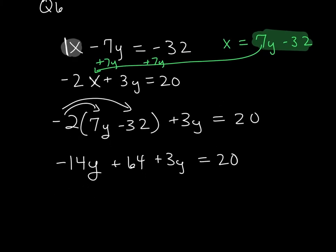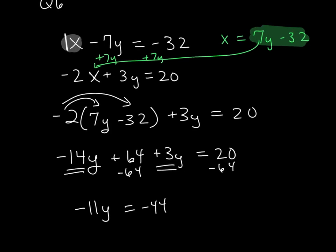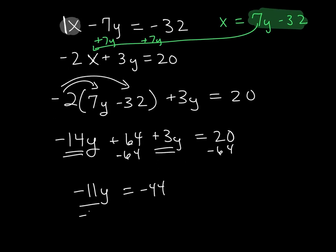I want to combine my like terms. That's -14 and +3, so that is -11y. I'm going to subtract 64 from both sides here as well, and I get -11y = -44. Finally, I divide both sides by -11 and get the fact that now I have y = 4. So that's my first solution.